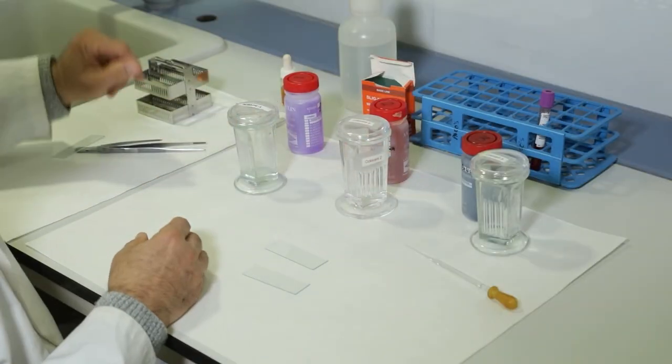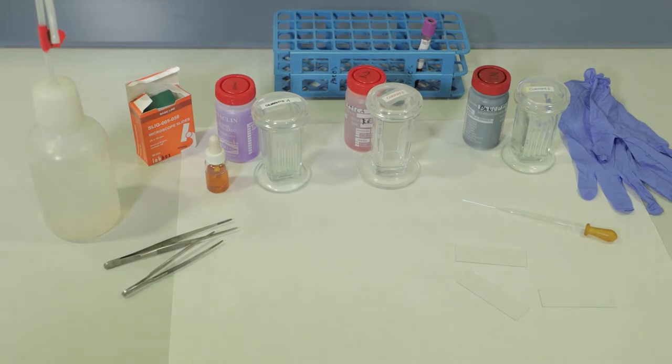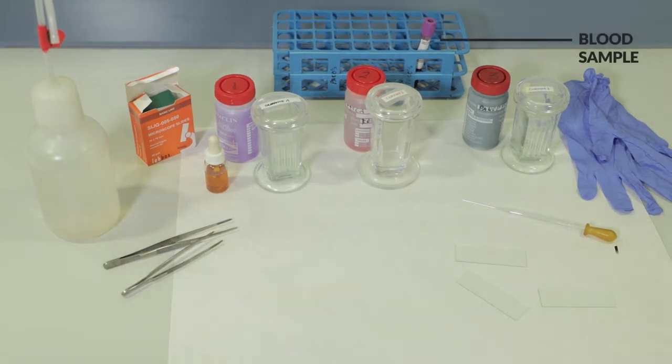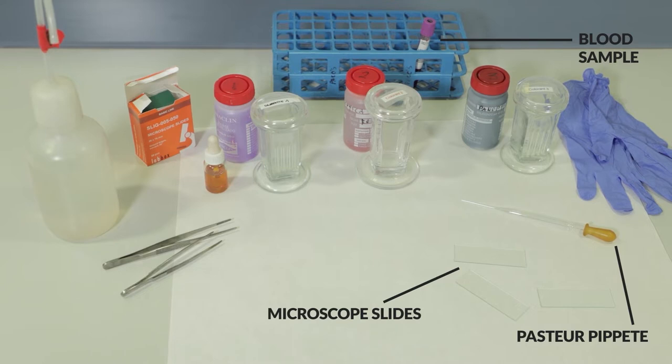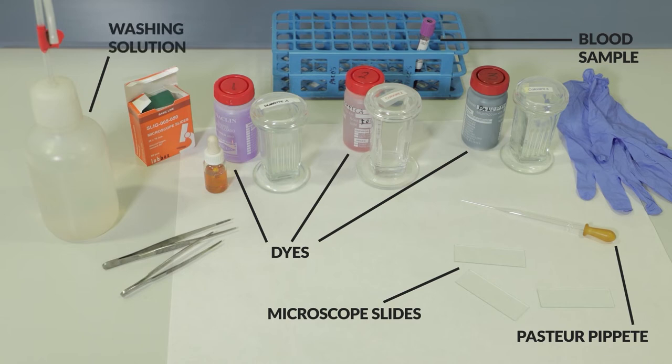Required material. To conduct the frotis, the following material is needed: blood sample, Pasteur pipette, microscope slides, dyes to conduct a differential staining of the blood samples, washing solution, and tweezers.